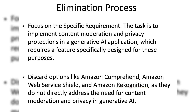To solve this question, the first step is to understand the purpose of each option and then eliminate ones that clearly don't fit. Focus on the specific requirement: the task is to implement content moderation and privacy protections in a generative AI application. Discard options like Amazon Comprehend, Amazon Web Service Shield, and Amazon Recognition that do not directly address this need.